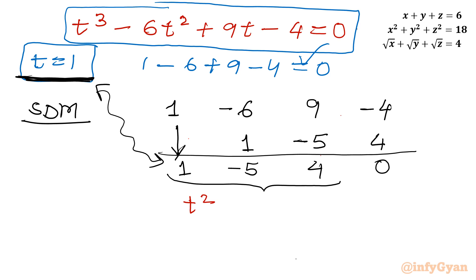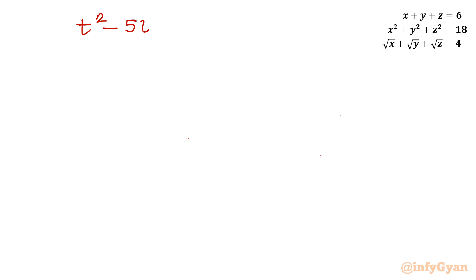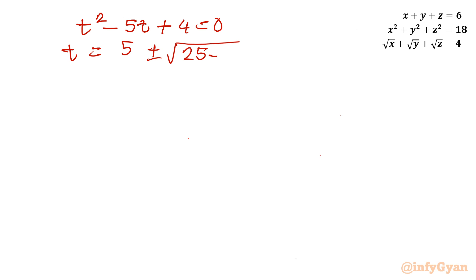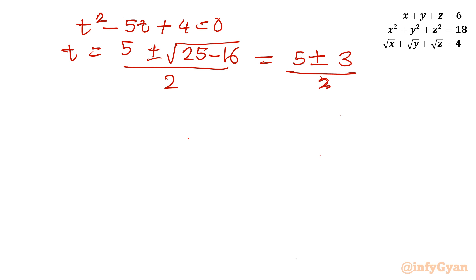Now I will apply the Sridharacharya formula to t squared minus 5t plus 4 equals 0. t equals (5 plus or minus √(25 minus 16)) over 2, which gives (5 plus or minus √9) over 2, so (5 plus or minus 3) over 2. This gives t equals 4 or t equals 1. Combined with our base solution t equals 1, the roots are 1, 1, and 4.